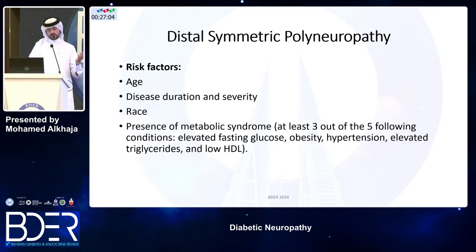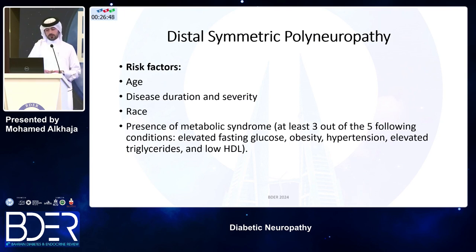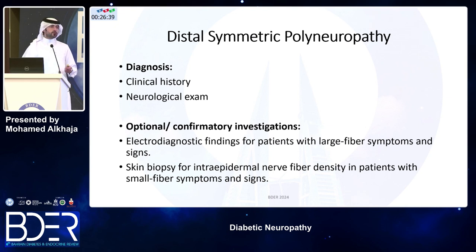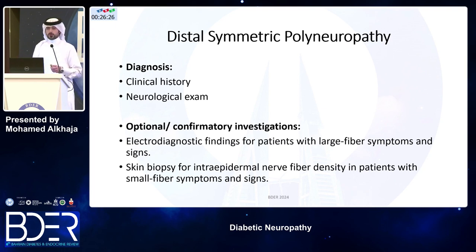Risk factors include age, disease duration, race — African Americans have higher risk of developing distal symmetric polyneuropathy — and the presence of metabolic syndrome, defined as three out of five of: elevated fasting glucose, obesity, hypertension, elevated triglycerides, and low HDL. Diagnosis is mainly through physical exam and clinical history; electrodiagnostic testing is not routinely needed.